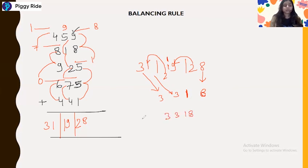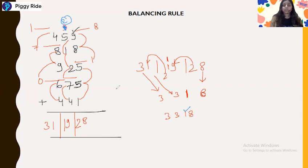So we have the answer 3318. Let's check if it is correct: 1 plus 5 is 6, 6 plus 5 is 11, 11 plus 8 is 19 — that's the 8 here, and 2 is the carry. So 2 is the carry. Now forget the 9: 7 plus 4 is 11, 11 plus 2 carry is 13, 13 plus 1 is 14, 14 plus 5 is 19, 19 plus 2 is 21. So we have 1 here and 2 will be the carry again.